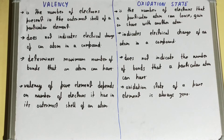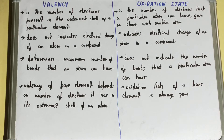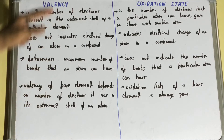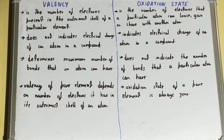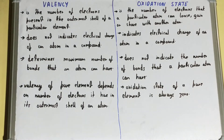Valency determines the maximum number of bonds that an atom can have, whereas oxidation state does not indicate the number of bonds that a particular atom can have.